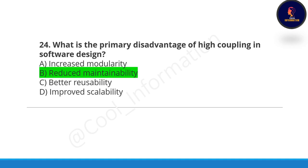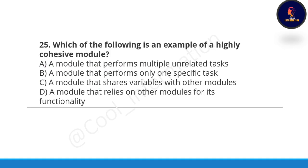Next question: what is the primary disadvantage of high coupling in software design? Option B is correct — reduced maintainability. If you use high coupling in software design, it will reduce the maintainability of the software. Next question: which of the following is an example of a highly cohesive module? Option D is correct — a module that performs only one specific task is an example of a highly cohesive module.